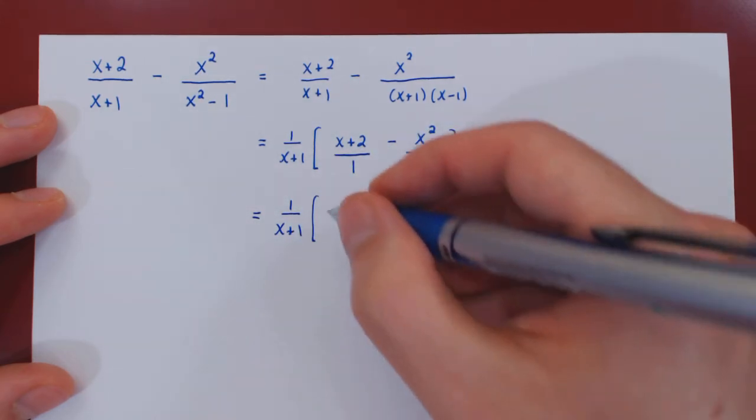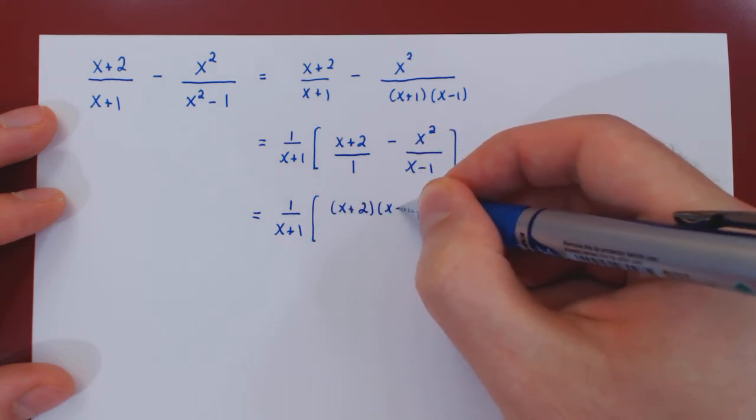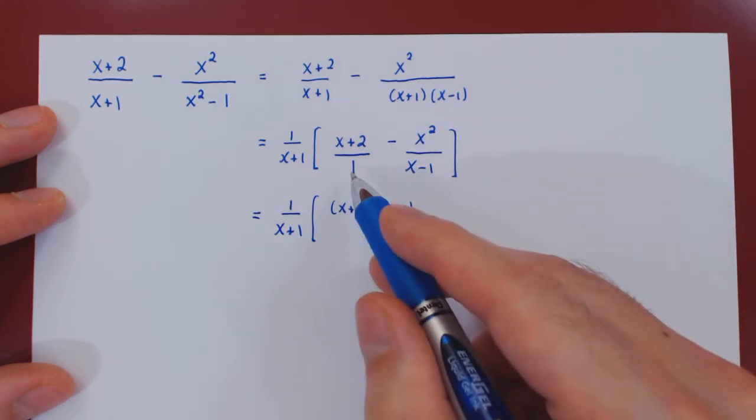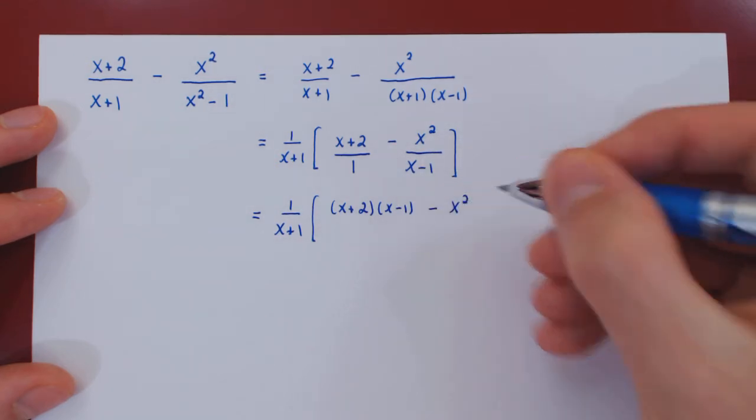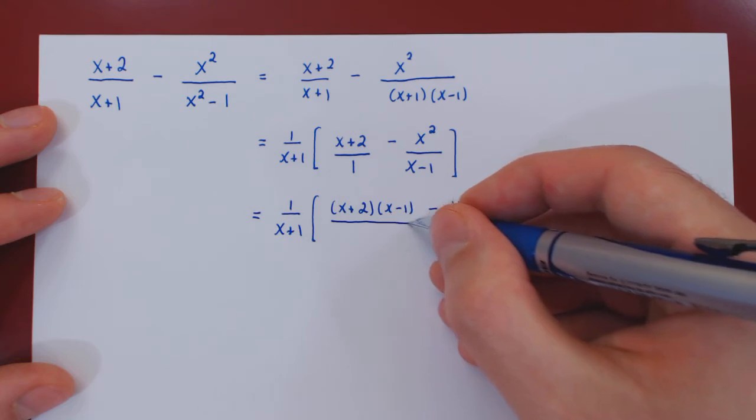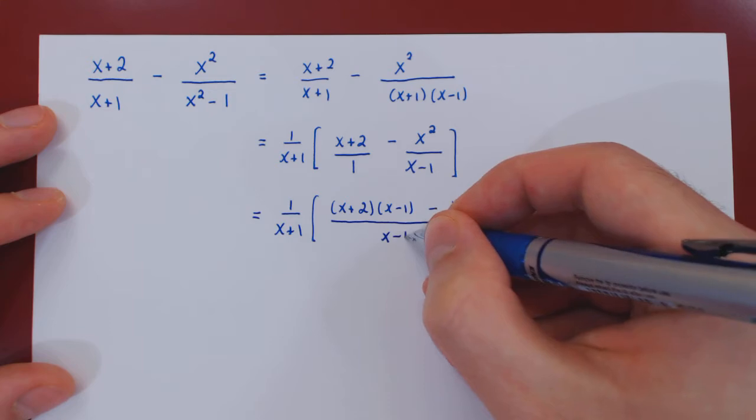So we'll have x plus 2 times x minus 1 minus x squared over 1 times x minus 1, that of course is only x minus 1.